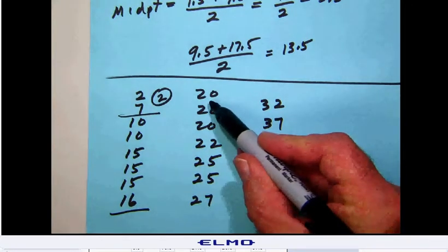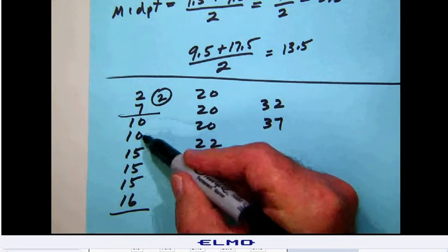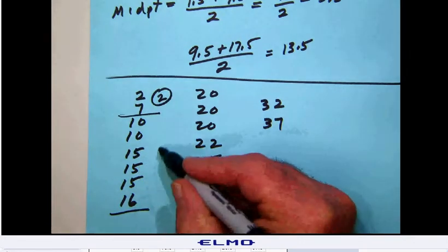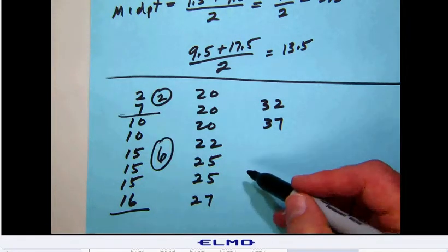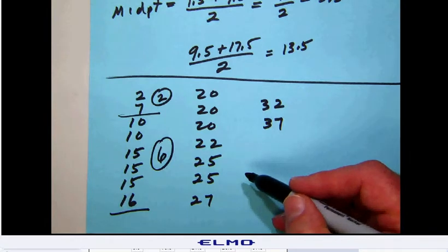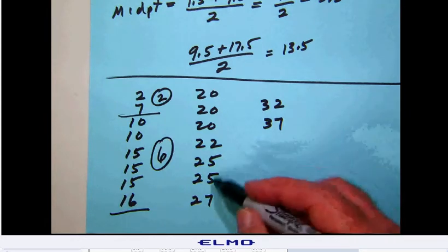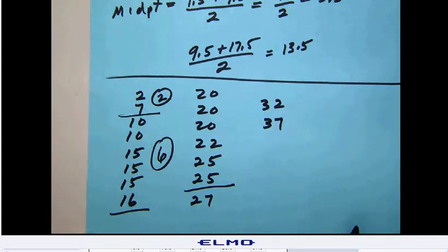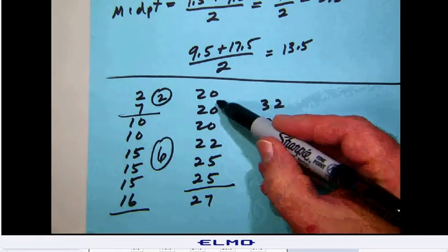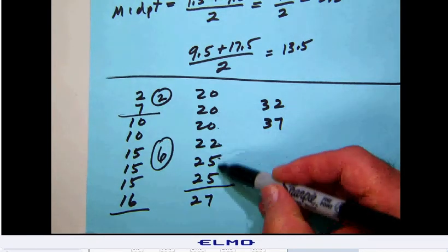The next category is going to be from 17.5 to 25.5. 25.5 is going to cut between the 25 and the 27. There are 1, 2, 3, 4, 5, 6 values in that class.